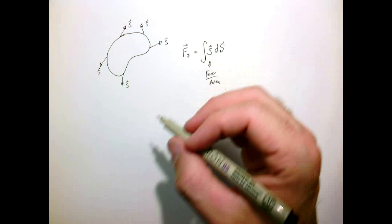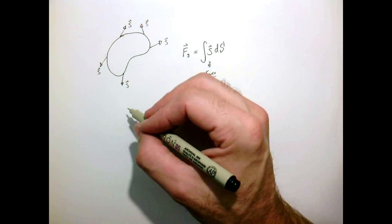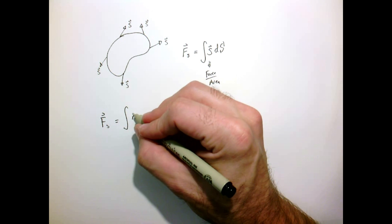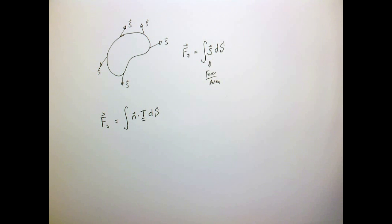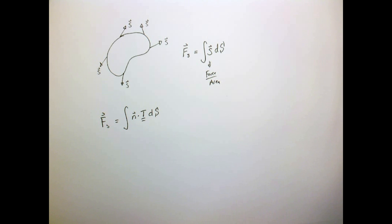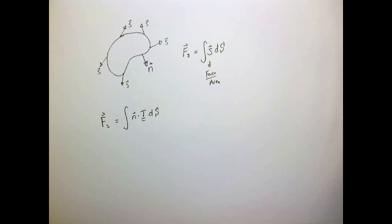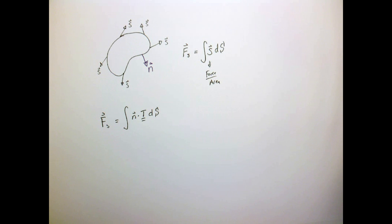But we know this stress vector is given, is related to the stress tensor. So I can replace the stress vector with the normal vector, right, the normal vector which points everywhere out of our surface, dotted with the stress tensor at that point.